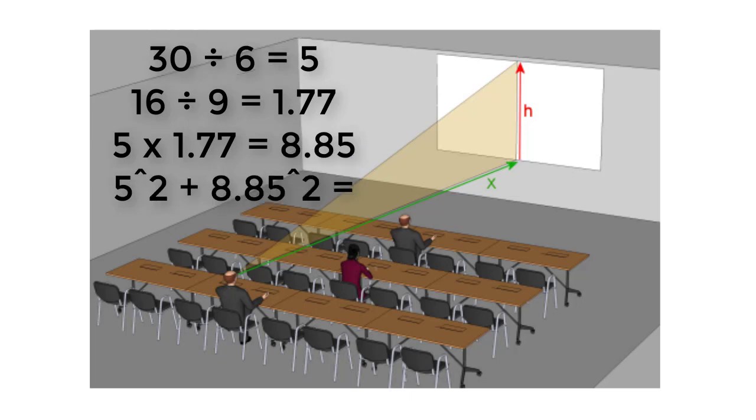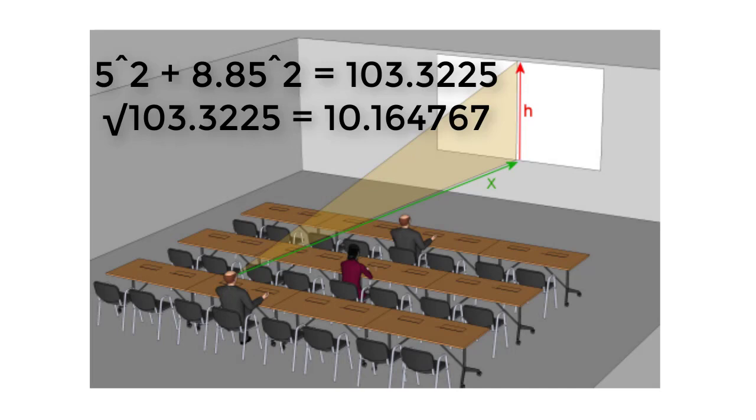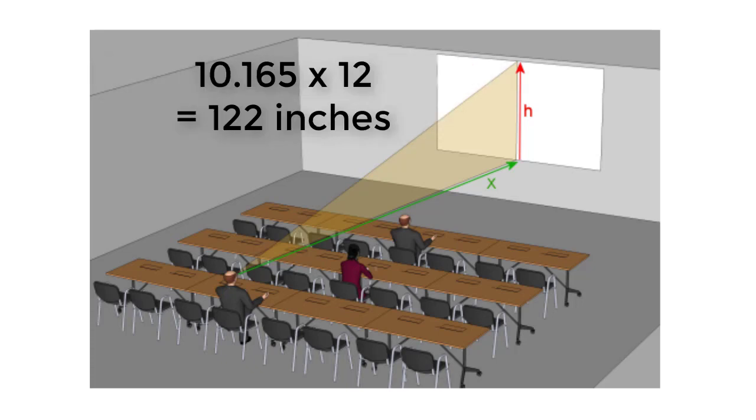Now, finally, we square the width, square the height, add the two together, and take the square root of the sum. This gives us a diagonal of 10.165 feet. Now, you multiply that number by 12 to get the diagonal in inches. And that, my friends, is 122-inch screen size.